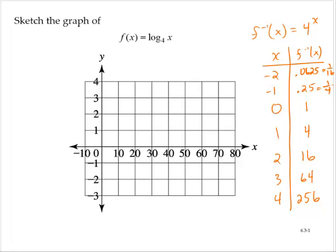Now these are ordered pairs for the inverse of the function that we desire to graph. So now we want f(x) = log₄(x). Since we know ordered pairs on the inverse function, we will invert them to get ordered pairs for the original function.